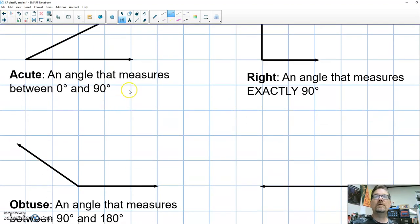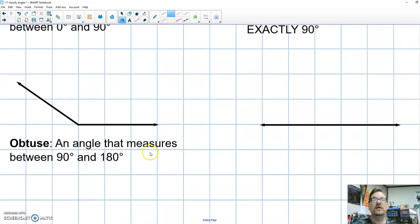Our next type of angle, you probably know this one too, is called an obtuse angle. An obtuse angle is any angle that measures between 90 and 180. So what that means for us is our angle theta, our Greek letter theta, has to be bigger than 90. It cannot be 90 because if it's 90, it's a right angle and it has to be smaller than 180. Not allowed to be 180.